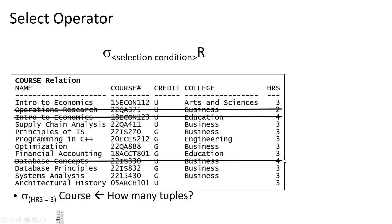So those tuples where hours does not equal three would not be returned, but the ones where hours equals three would be. Out of this relation with 12 tuples, it looks like nine of them would be returned by this relational algebra expression.